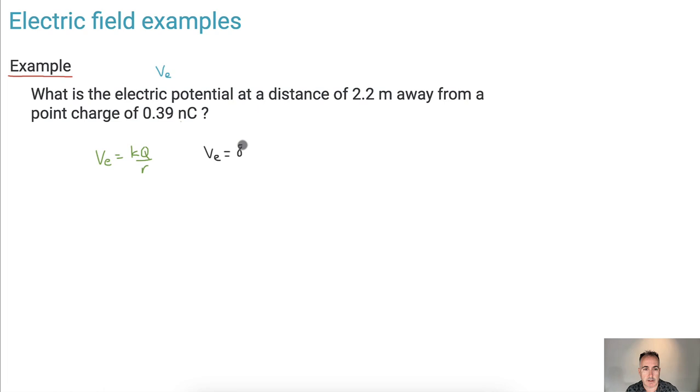Now K is 8.99 times 10 to the 9. Now KQ times the charge. Well, the charge is 0.39, but be very careful. It's nano. So nano means times 10 to the minus 9. Again, if you didn't remember that, you can always look it up on your data book. They actually tell you in the first couple of pages what all the prefixes are. Divide that by 2.2 meters and you're done.